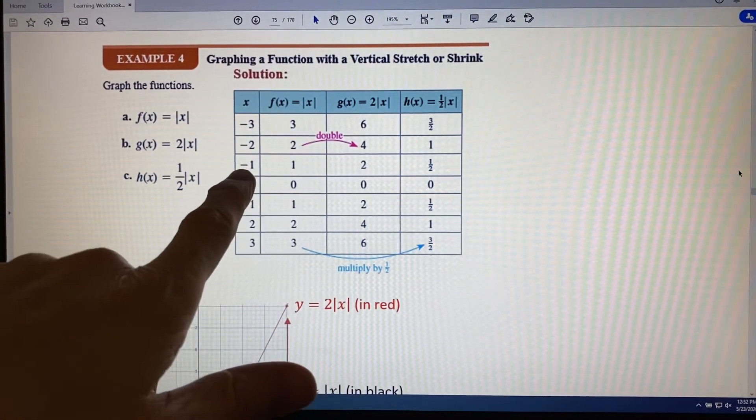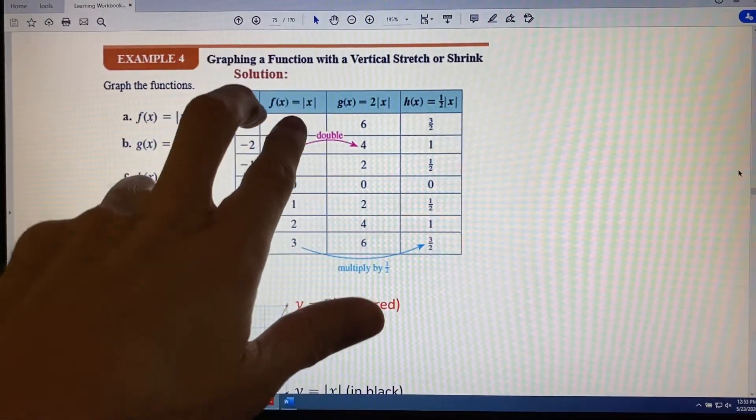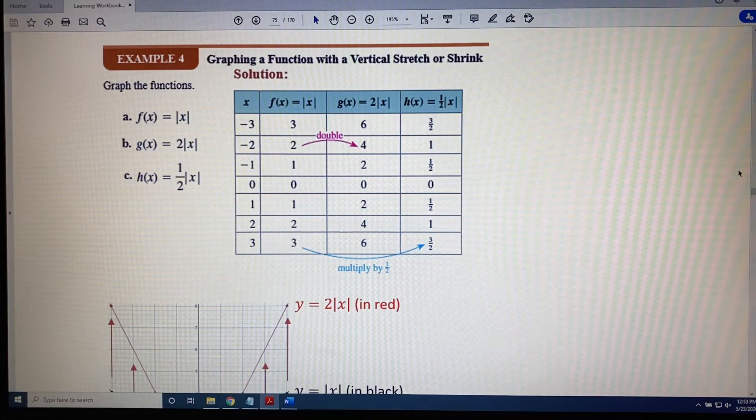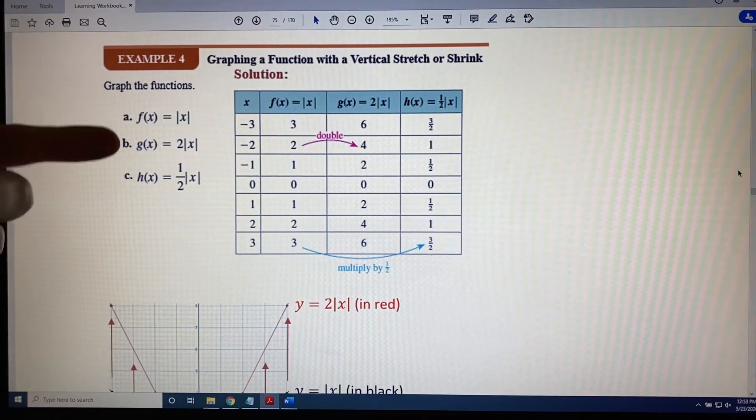Negative 2, positive 2. Negative 1, 1. 0, 0. 1, 1. 2, 2. We have seen these coordinates before. So now we have to come up with the new graphs and the new table of points for these two functions.